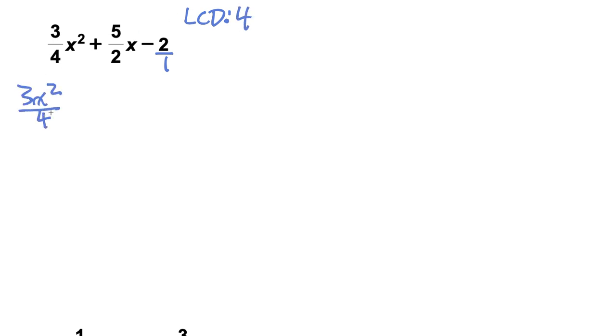It's going to be 3x squared over 4 plus 5x over 2. We have to multiply this by 2 over 2 to get that 4 denominator, and this 2 over 1 by 4 over 4.